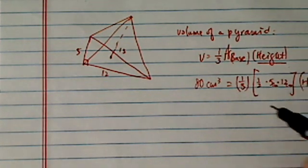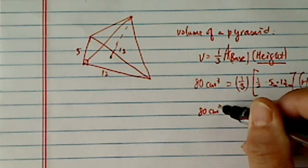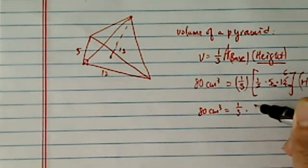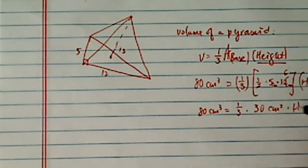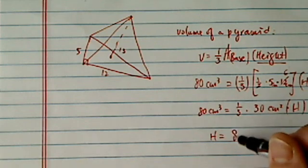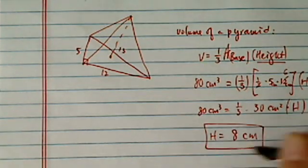So I have 80 centimeter cubed is equal to one-third times this cancels to 6, that's 30 centimeters squared times height. So the height is equal to 8 centimeters.